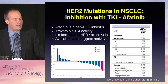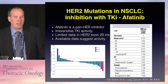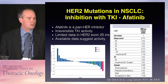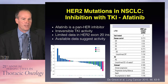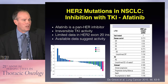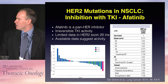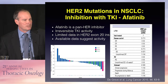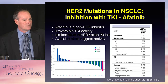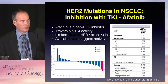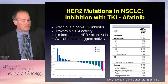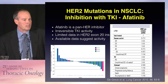Afatinib is a pan-HER inhibitor, so it not only inhibits HER1 (EGFR), it also inhibits HER2 with irreversible activity. There is limited data in HER2 exon 20 insertion non-small cell lung cancer. In the waterfall plot, focusing on the green bars — only seven patients — five of these patients showed some benefit. One was an unconfirmed PR. This suggests there may be some activity of afatinib in HER2 exon 20 insertion non-small cell lung cancer patients.